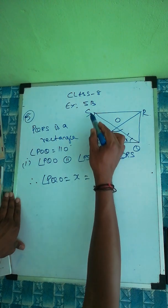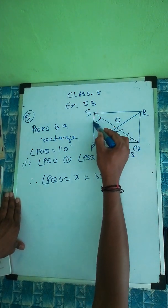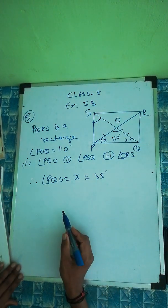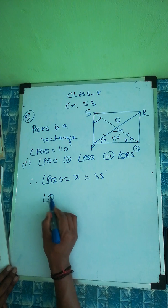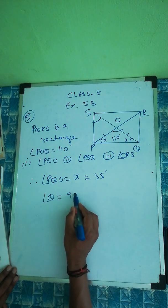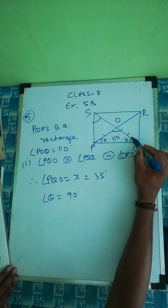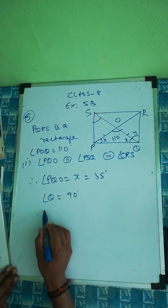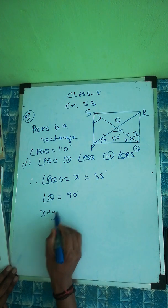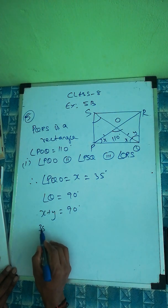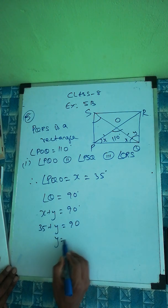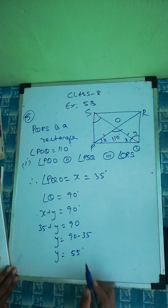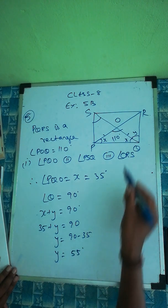Now finding angle PSQ. Since angle Q equals 90 degrees in a rectangle, we can write X plus Y equals 90. With X equal to 35, we get Y equal to 90 minus 35, so Y is 55 degrees.